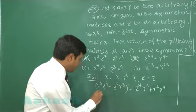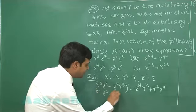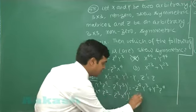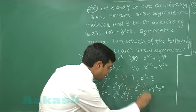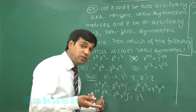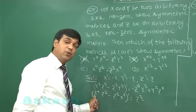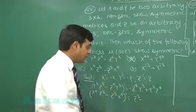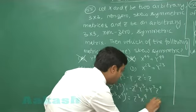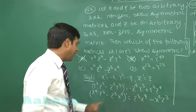Option C: This is X⁴Z³ minus Z³X⁴ transpose, that is Z³ transpose. So it is simply the same Z³, X transpose means minus X whole to the 4th, means plus again. So it is Z³ multiplied with X⁴ minus X⁴Z³.